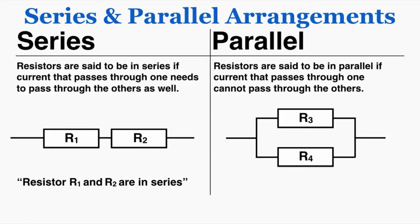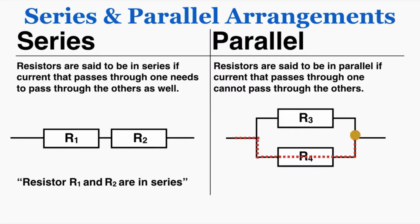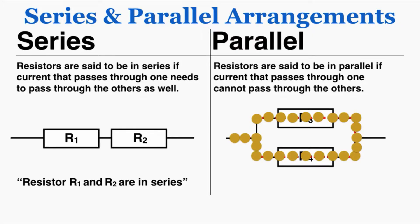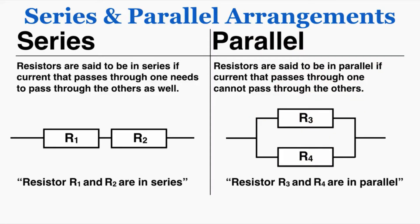In comparison, resistors are said to be in parallel if current that passes through one cannot pass through the others. Resistors R3 and R4 are in parallel with each other. An electron starting at one end can take one path through R3 and not through R4, or it can pass through R4 and not through R3. If it tries to go through both, it hits a dead end, because other electrons are already moving through another part of the circuit. So current that passes through R4 cannot pass through R3, and vice versa — R3 and R4 are in parallel.